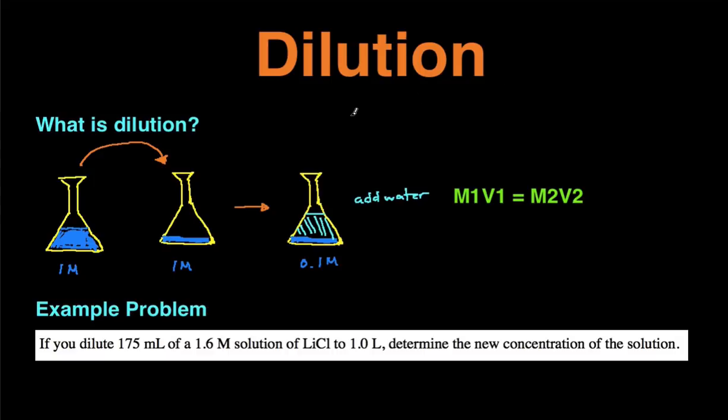We'll first talk about what dilution is, what the process is, and then we'll go into two example problems. Simply said, dilution is the process of turning a more concentrated solution into a less concentrated solution.